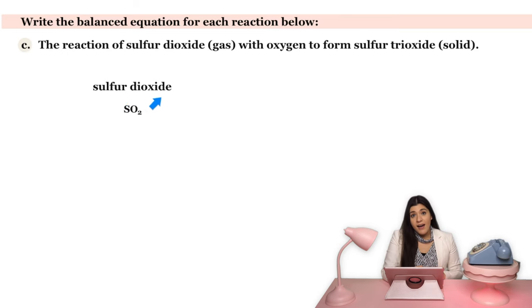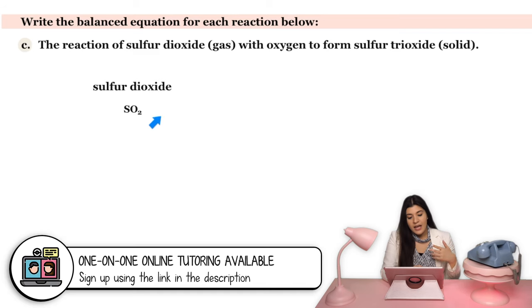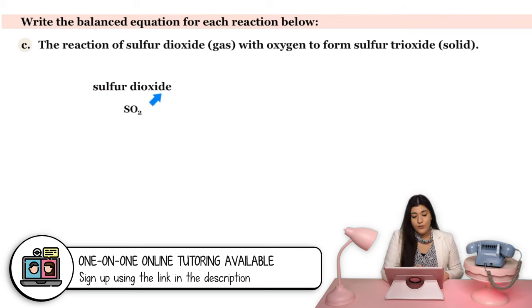And then remember, anything that ends in '-ide' just means that there's only one element there. There are some exceptions for some polyatomic ions, but for this type of question, that just means it's just oxygen. So this is SO2. That's what it's referred to as sulfur dioxide.